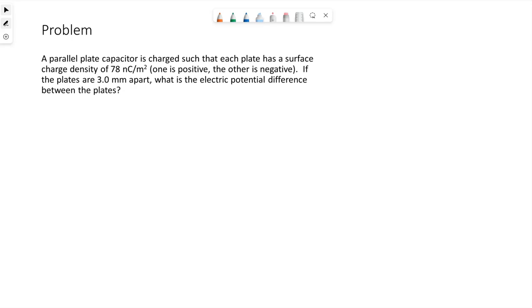We have an example problem here. A parallel plate capacitor is charged such that each plate has a surface charge density of 78 nanocoulombs per meter squared. One plate is positive, the other is negative. If the plates are 3 millimeters apart, what is the electric potential difference between the plates?